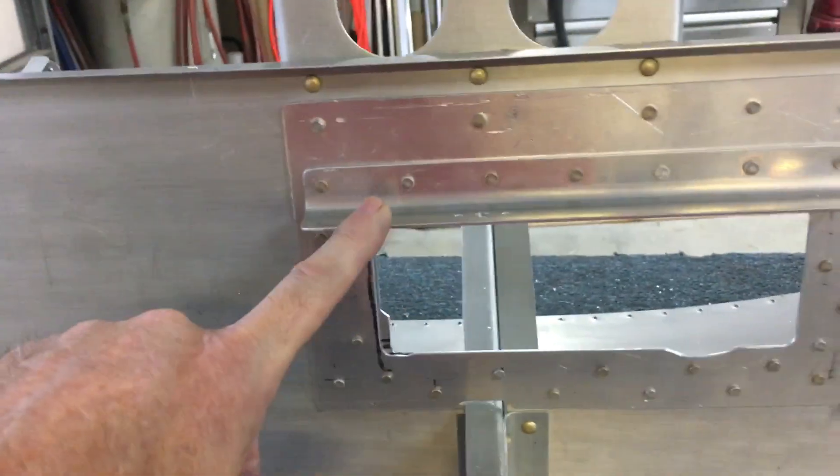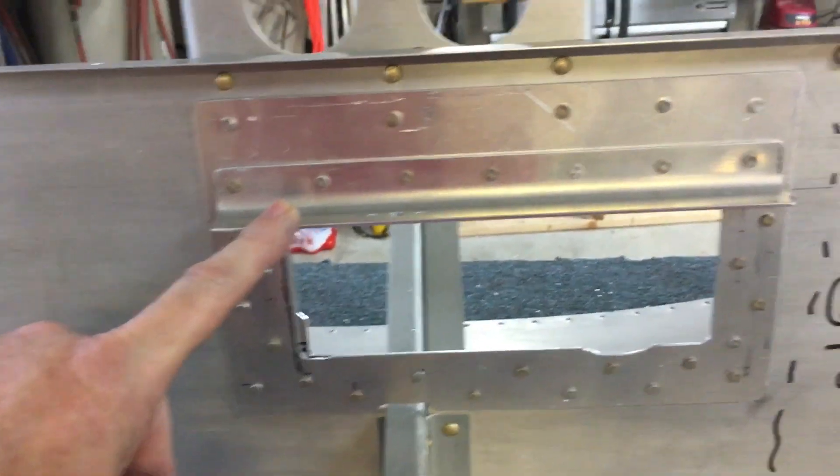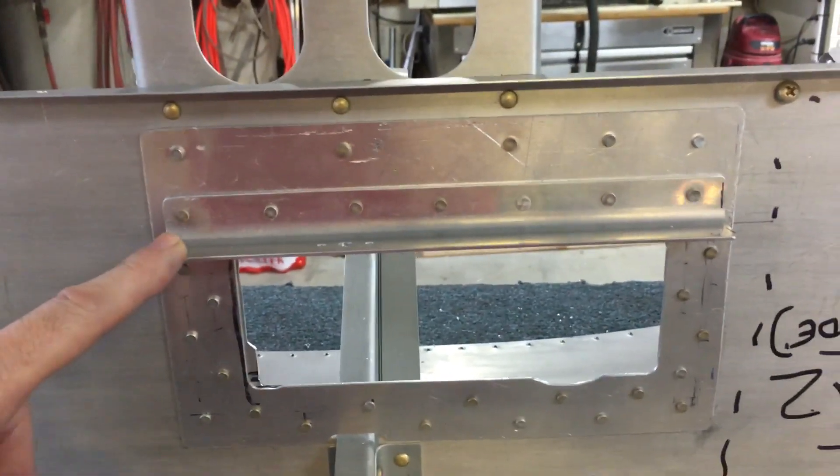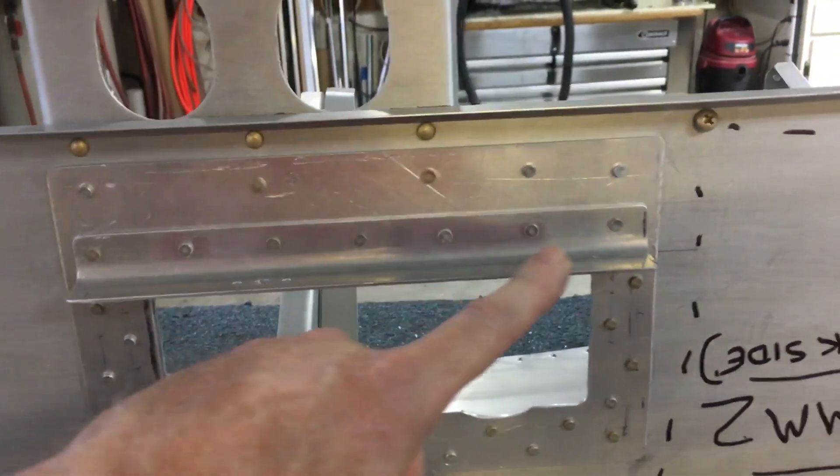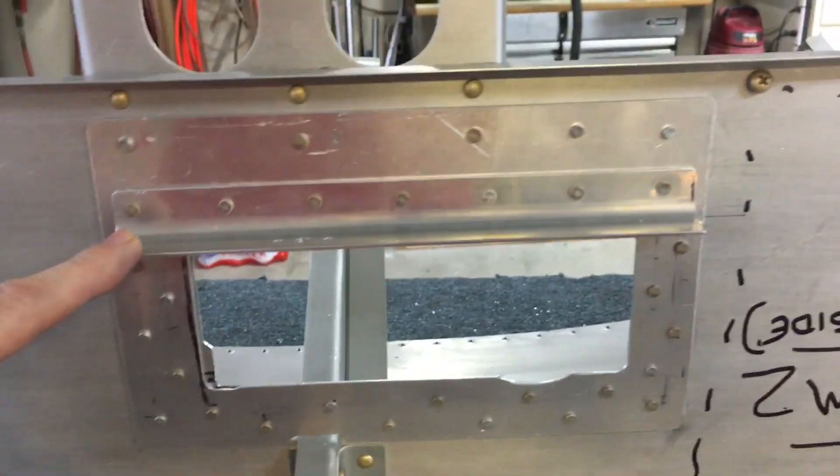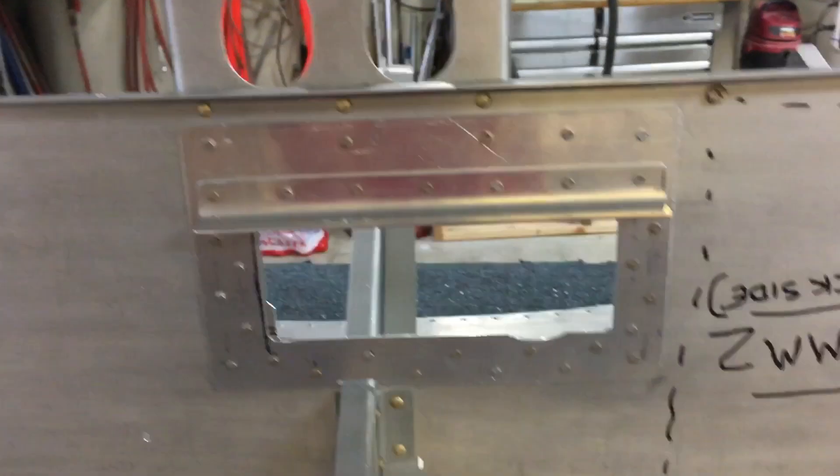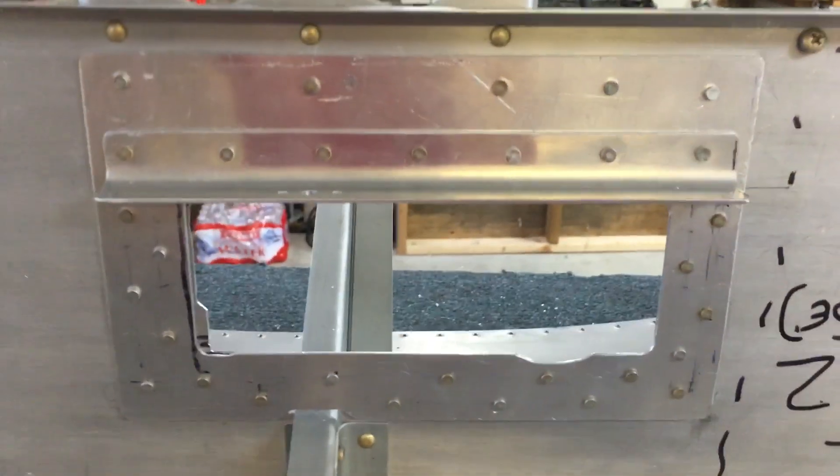This was a scrap piece I had from, I think, part of the battery box that I didn't use. I created my own out of extruded material because this had a really good bow in it, which I just didn't want to pull in. They tell you in the plan you can pull it with Clicos as you do it.